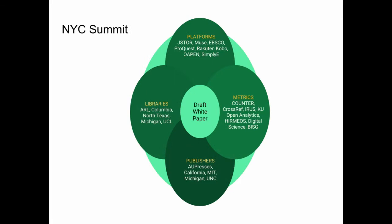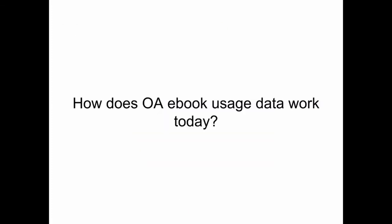A little more about that invitation-only summit: we explicitly tried to bring together a number of communities, especially between Europe and North America, and between the for-profit and not-for-profit sectors of stakeholders. Many of the organizations that were represented at that meeting are shown in this diagram. So with that overview of the motivations, objectives, and timeline for our work, I want to go into a little more detail about how usage data for open access ebooks works and doesn't work today.